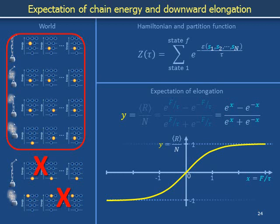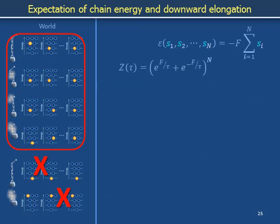In this video we will use the partition function we derived in the previous video to calculate the average energy and elongation of the chain and weight. When we say average we mean averaged over the dynamics by which the world explores the configurations that it can access. We can use the partition function to calculate the average energy of the system by taking the derivative of the natural logarithm of the partition function, as mentioned in the previous slide deck.